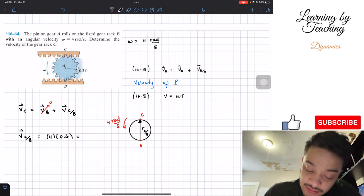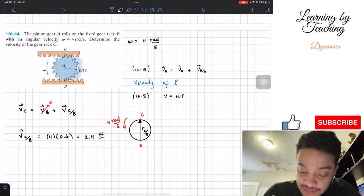If we plug this into our calculator, it will give me 2.4 feet per second.